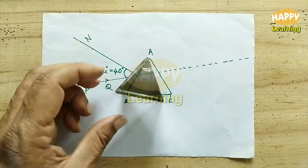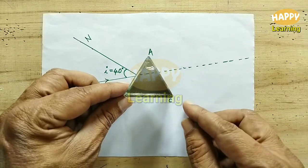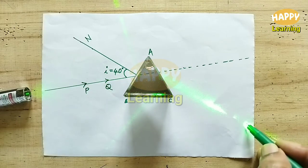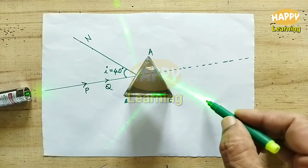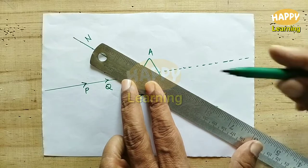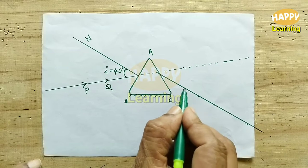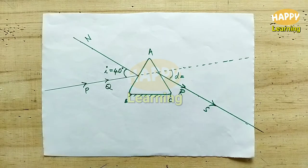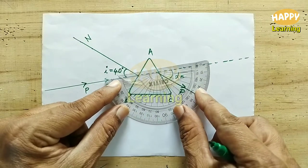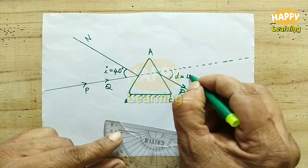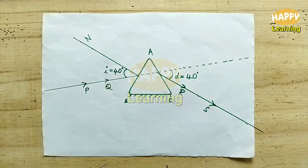Place the prism as it is and project the laser beam along the incident ray PQ. You will get the emergent ray on the other side of the prism. Put two dots on the emergent ray so that you can draw it. Join these points — you will get the emergent ray, called RS. The angle of deviation is found using the protractor and here it is 40 degrees. So D equals 40 degrees.